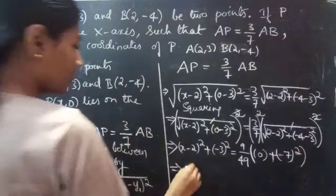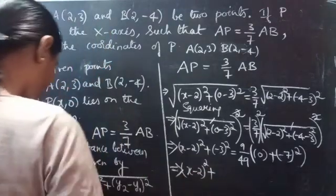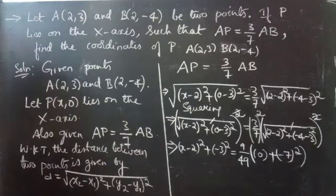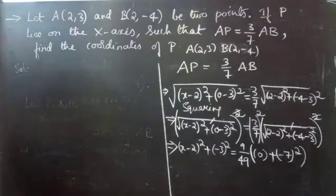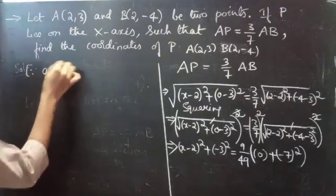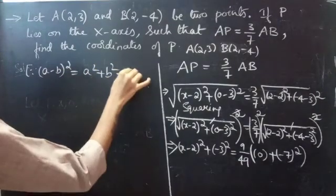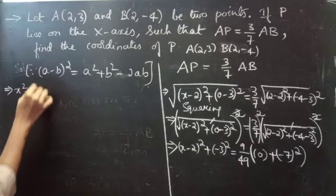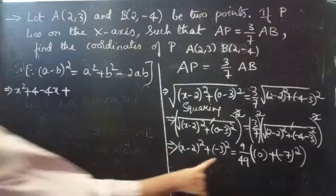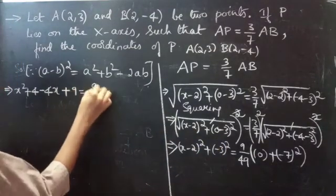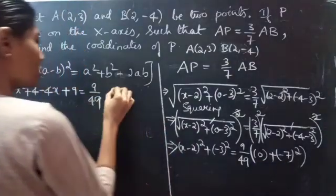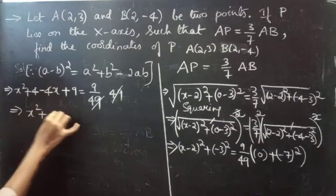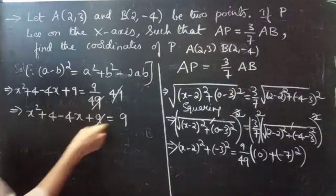We apply the formula (A minus B) squared equals A squared plus B squared minus 2AB. This gives us x squared plus 4 minus 4x plus 9 equals 9 by 49 times 49. The 49 and 49 cancel, so we get x squared plus 4 minus 4x plus 9 equals 9. Then 9 and 9 cancel.